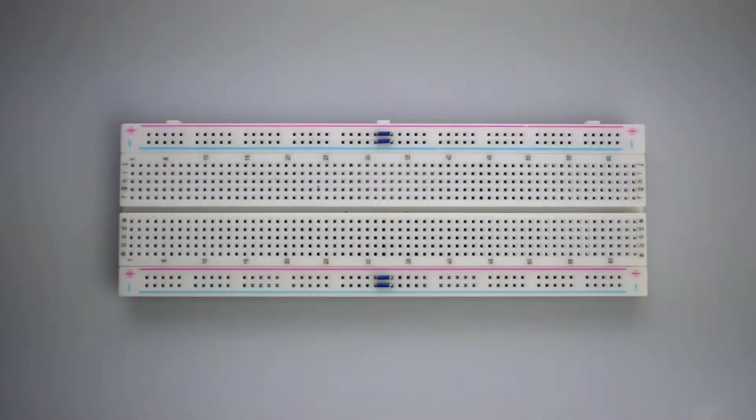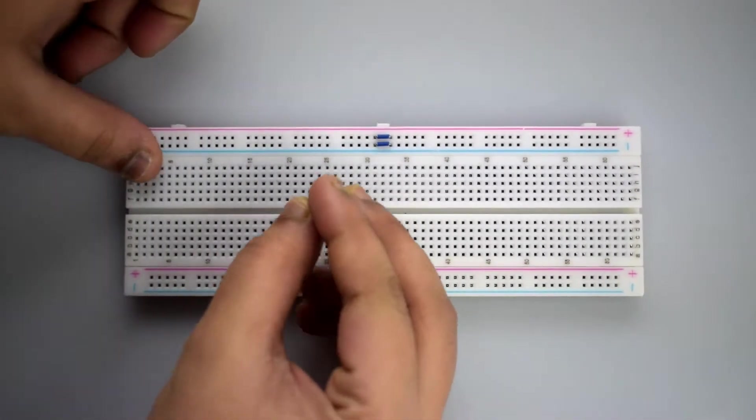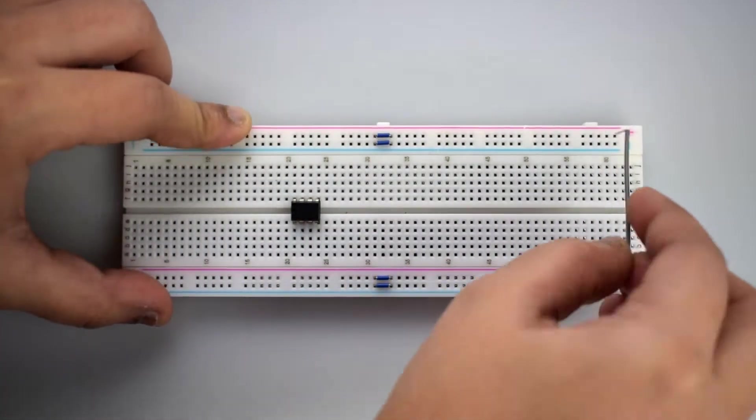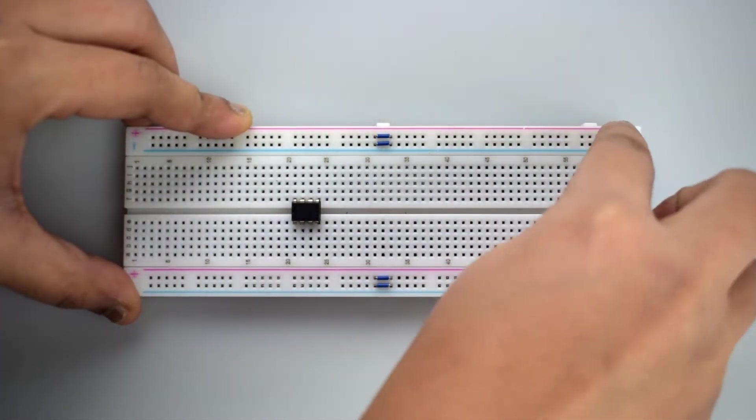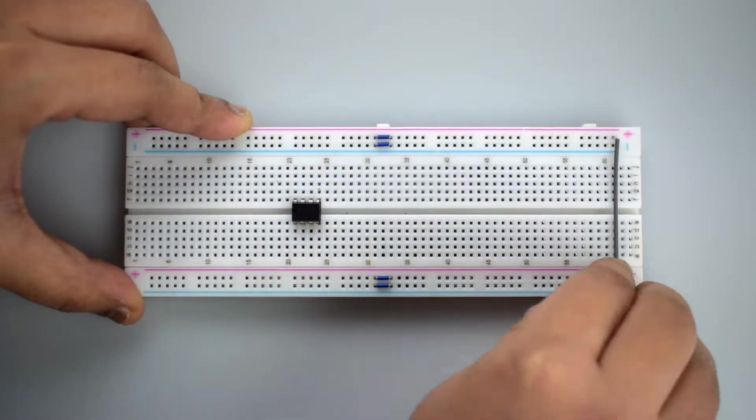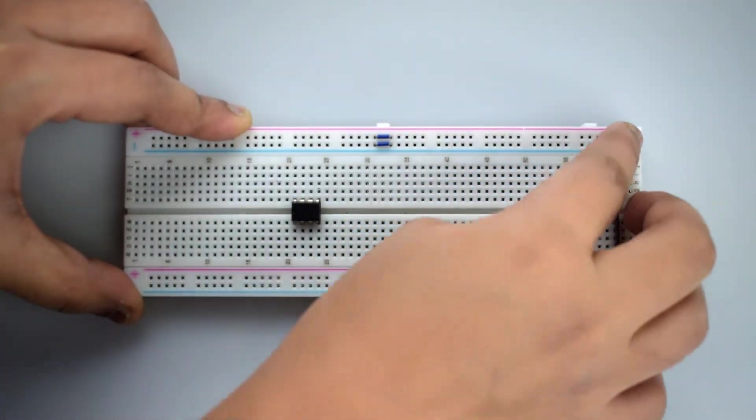So let's start. First of all, attach the 555 timer IC on the breadboard. Now make a common connection for positive supply with the positive rail on the breadboard for the convenience of power supply.